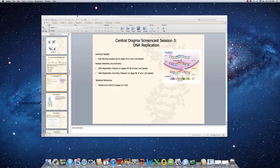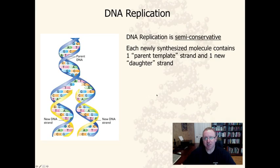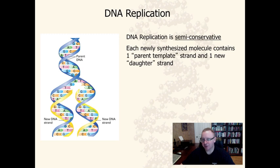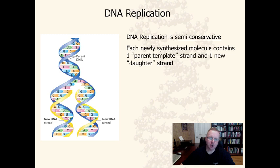DNA replication occurs in a semi-conservative nature. The Meselson and Stahl experiment is a great example of scientific thinking and experimental design. The big idea is semi-conservative: one old strand and one new strand. This preserves the genetic code from generation to generation as new DNA is produced for each new generation of cells.